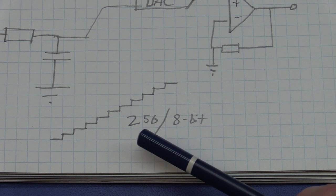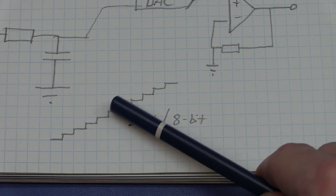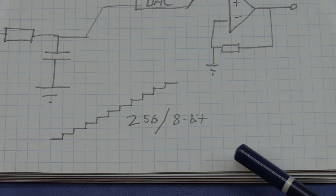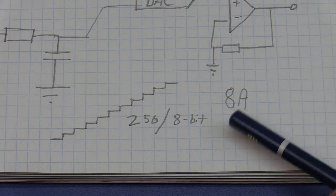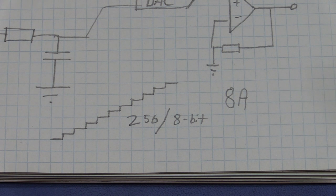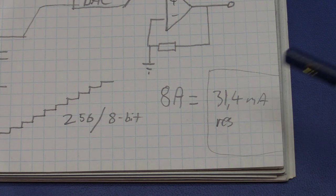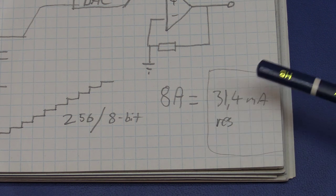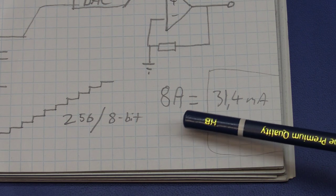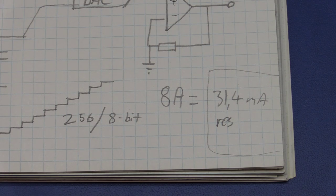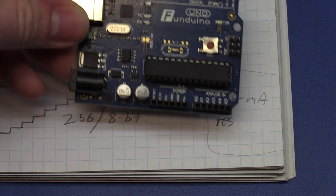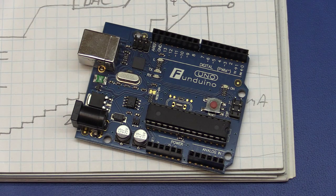Now we can generate a signal that will be fine for the op-amp, but the problem is that we only have 256 steps on our staircase - 8 bits. If my constant current load needs to draw 8 amps, we can calculate the resolution: that turns out to be 31.4 milliamps per step, which is not really useful if you want to set a precise current value. So we need to do something about this 8-bit limitation. It turns out we can actually combine two PWM outputs to make a 16-bit one.